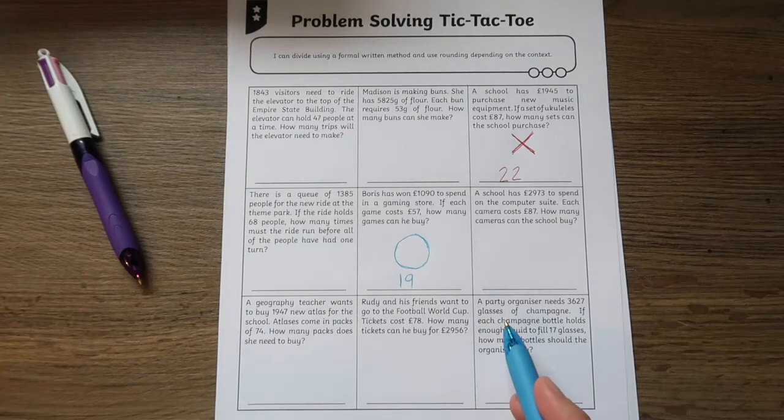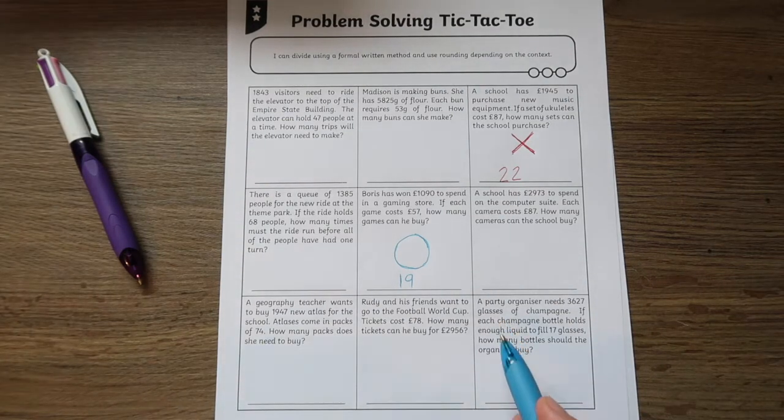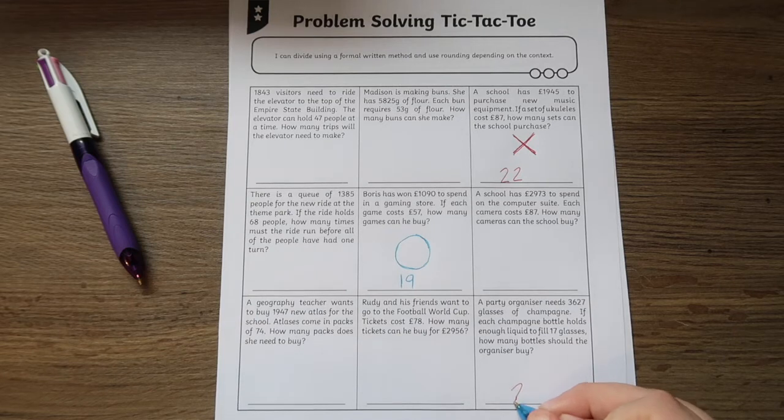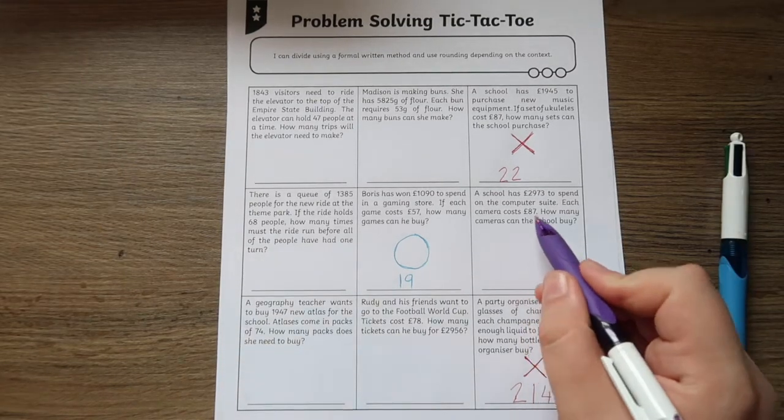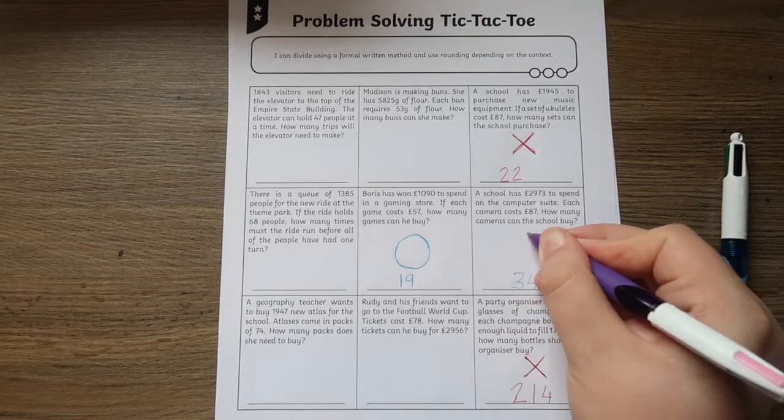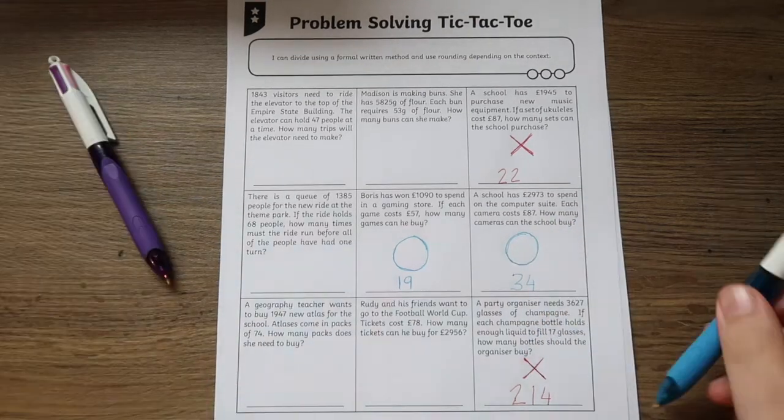This pack is perfect to complete in pairs. Remind children of the concept of how to play tic-tac-toe or noughts and crosses, and then add in the mathematical elements where they have to correctly get the answer right in order to fill in the box.